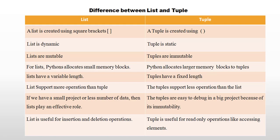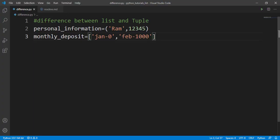Lists are mutable, meaning you can change the objects in the list. But once a tuple is declared and defined, you cannot change the objects in it. That is the meaning of mutable and immutable.